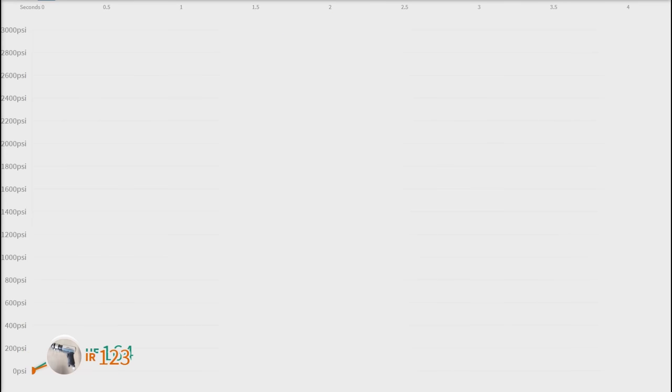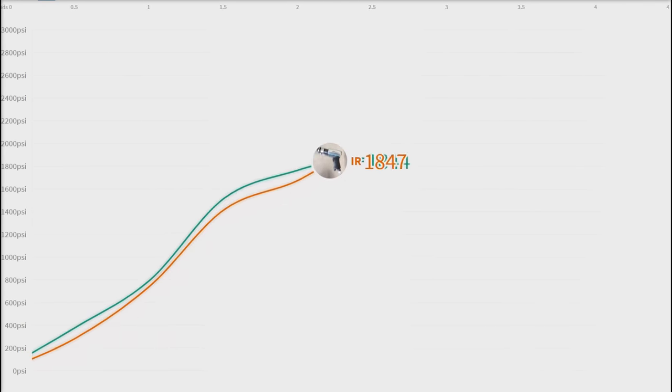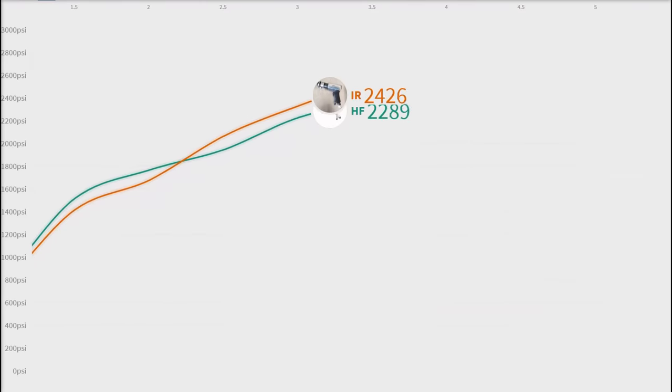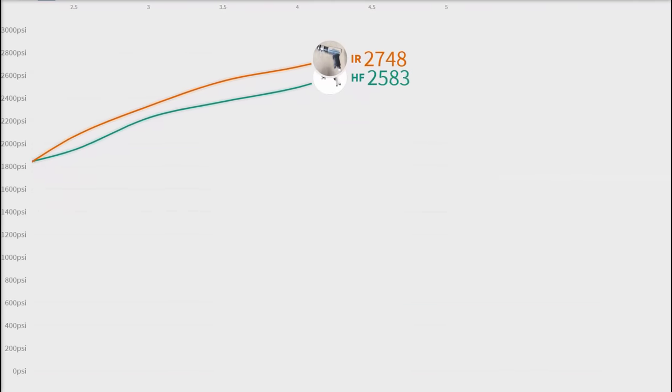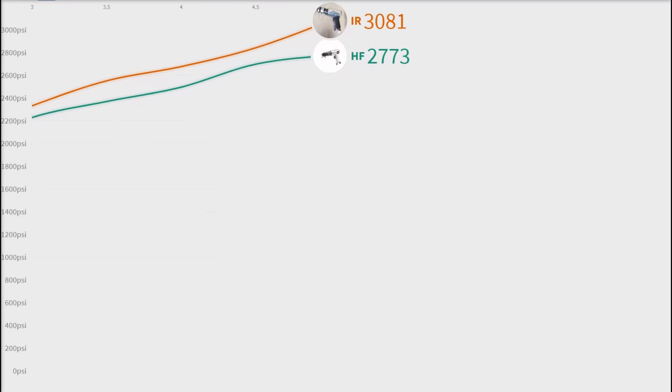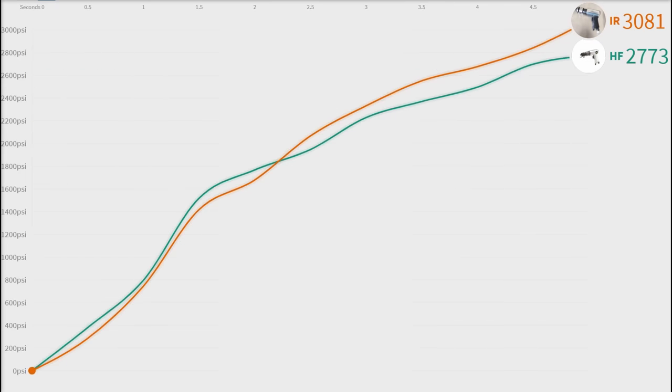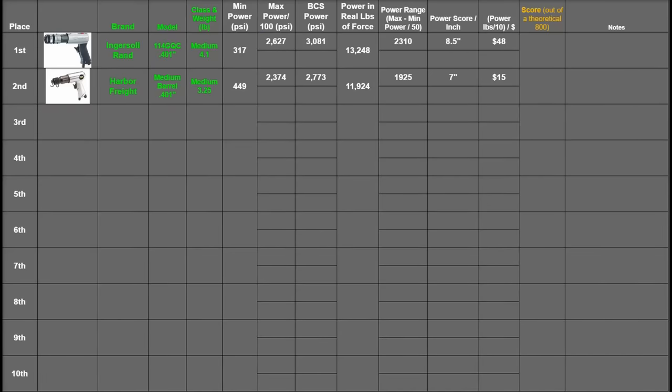In our testing, subjectively we could feel the difference between these two tools, like we can when there's a 10% difference between two impact wrenches. So the power crown has to go to the more expensive, albeit still budget-class, 114 GQC from IR. But let's see how the rank chart feels about these two tools' performance when we're incorporating the length and the cost of them.